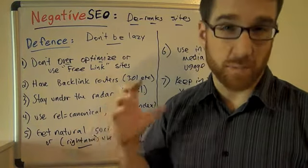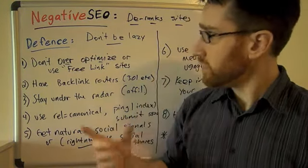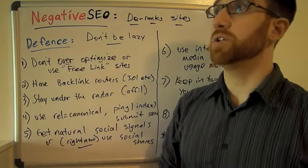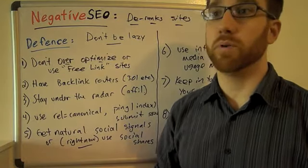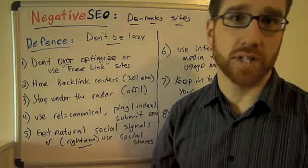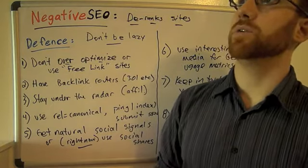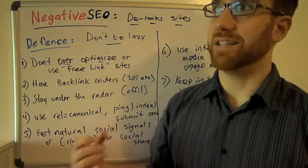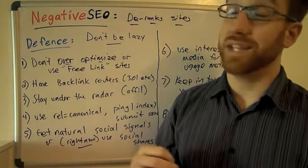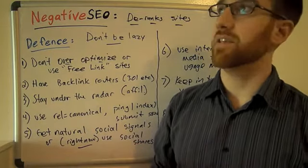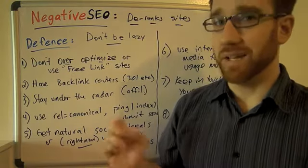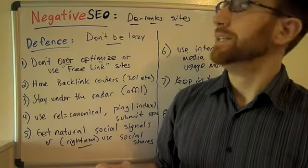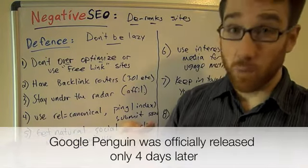In particular, there are some specific things you can do. Number one: don't over-optimize or use free link sites. Don't put your money keywords both in the URL and in the title and in every single backlink that you send to yourself — that is going to shoot yourself in the foot. You don't even need anybody to help you with that; that over-optimization is already a problem. I've seen dozens of sites be affected by this, and apparently Google is making it much, much worse. So it's just going to get worse and worse, so don't do that.